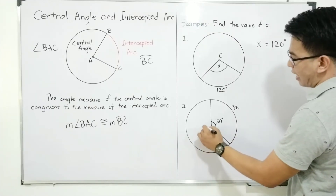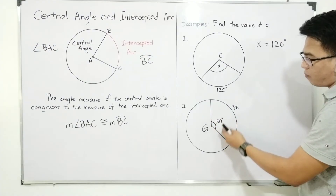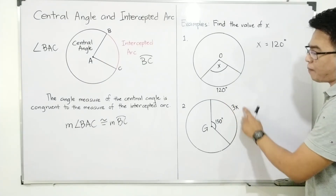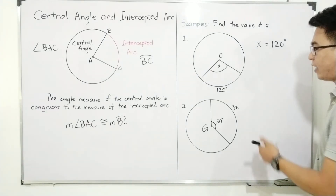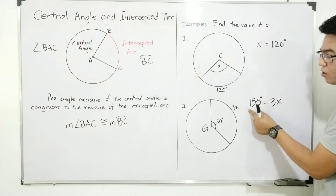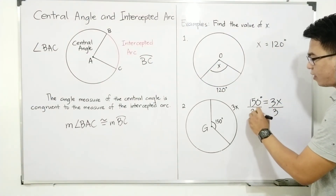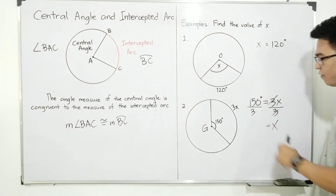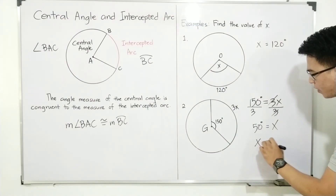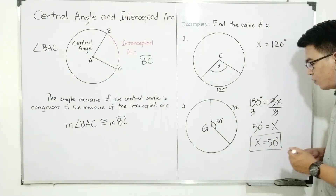How about this one? Let's name this circle G. We are asked to find the value of X. As you can see, the measurement of the central angle is 150°, and the intercepted arc is represented by 3X. Since they are equal, we can equate: 150 = 3X. To solve this, divide both sides of the equation by 3 — cancel and cancel — giving us X on one side, and 150 divided by 3 equals 50 degrees on the other. So X is equal to 50 degrees, which is the answer for problem number 2.